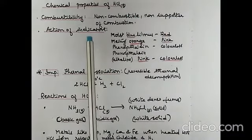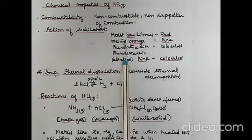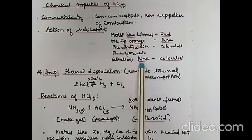Chemical properties: HCl gas is non-combustible and a non-supporter of combustion — it does not burn and does not help anything else burn. Regarding indicators: moist blue litmus paper or solution turns red; methyl orange turns from orange to pink; phenolphthalein is colorless and remains colorless with an acid. If alkaline phenolphthalein (made pink with a few drops of NaOH) is used, HCl turns it from pink to colorless.